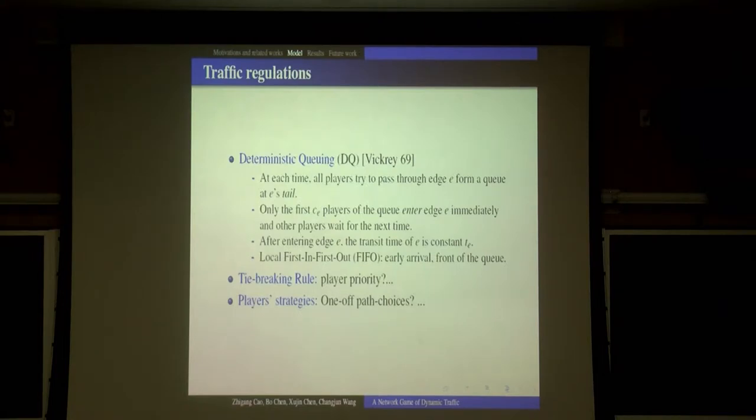The model is like this: at each time, all the players that have reached a vertex and are trying to pass through an edge E form a queue at that edge. Only the first, at most the first C_E players, can enter the edge immediately, and all the others have to wait for the next time. After entering edge E, the transit time of this edge is a constant T_E.